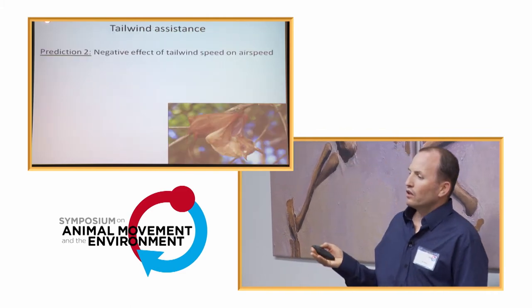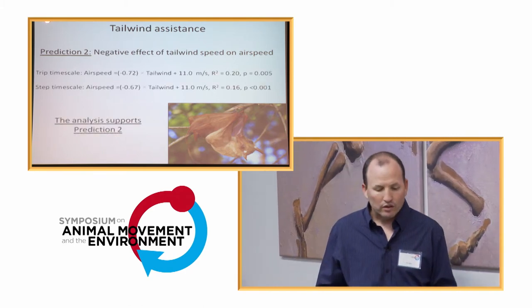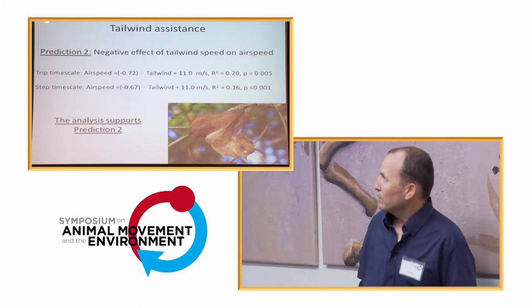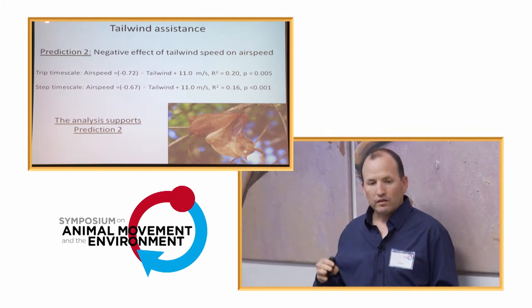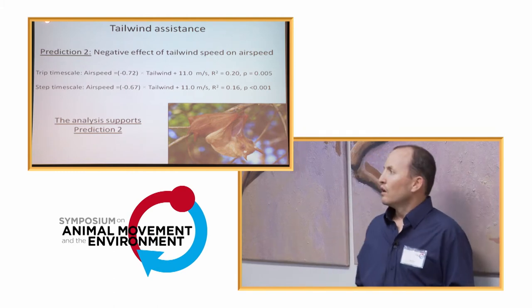Regarding our second prediction, we did find that there is a negative correlation between bat airspeed and tailwind speed in both timescales. So, the analysis overall supports our prediction.